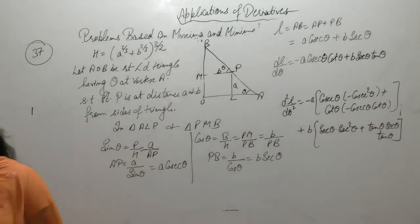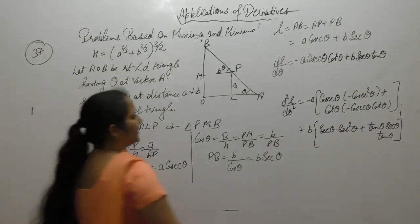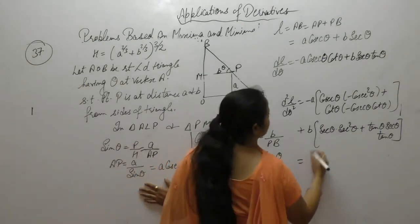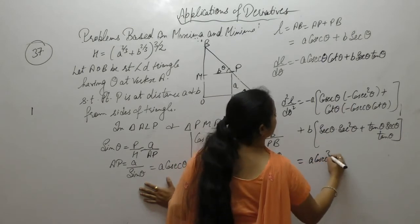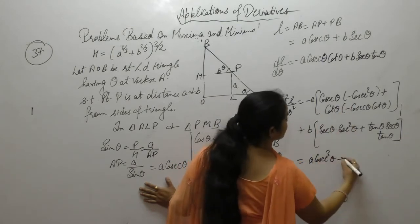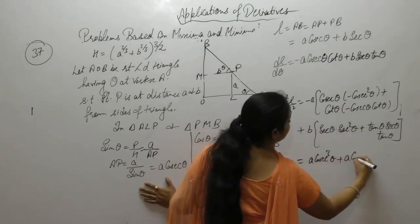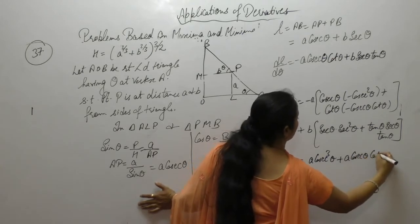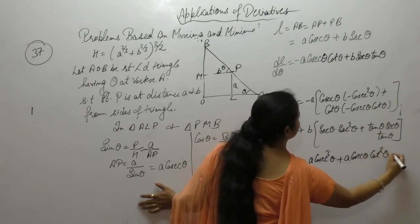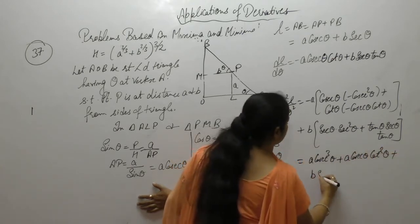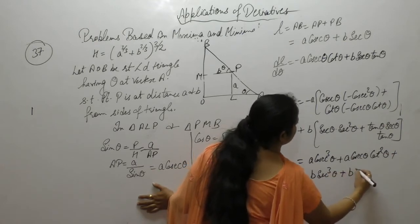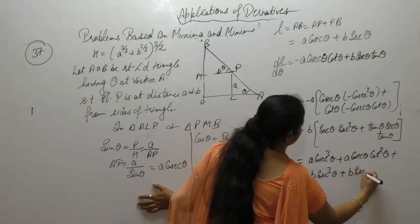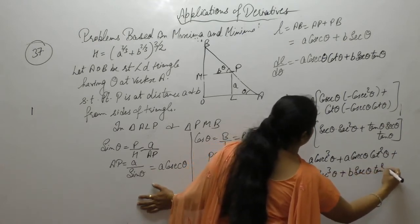In the next step, open the brackets. Minus minus gives plus A cosec cubed, plus A cosec theta cot squared theta, plus B sec cubed, plus B sec theta tan squared theta.